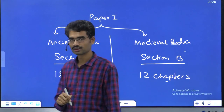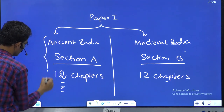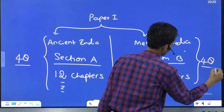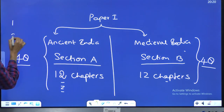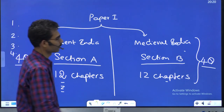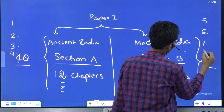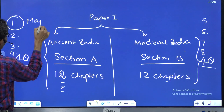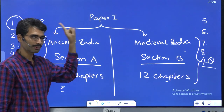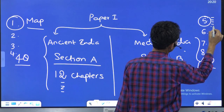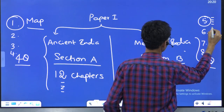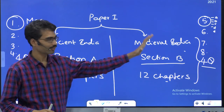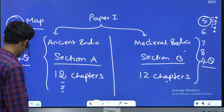Total 8 questions will come in Paper 1: 4 questions in Section A and 4 in Section B. Question number 1 is the map question, and Question number 5 is compulsory. In Paper 1, the first question is always the map. Let me show you how questions appear — I am taking the 2022 paper. This is how the UPSC question paper looks, with instructions given on the front.